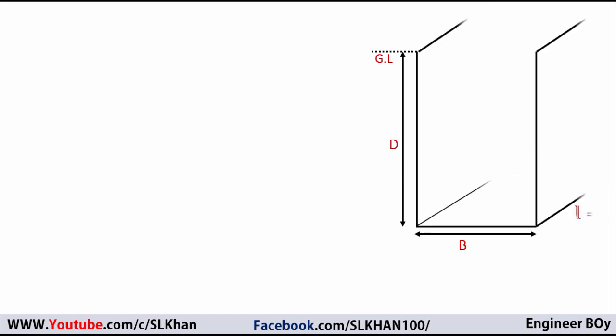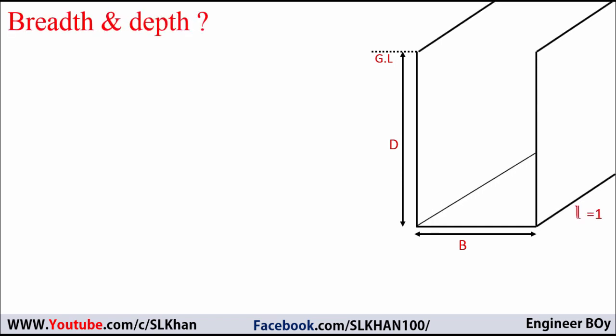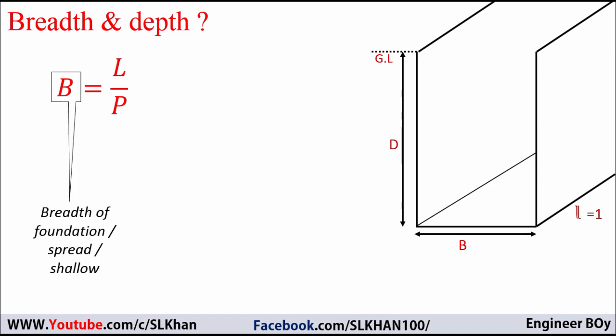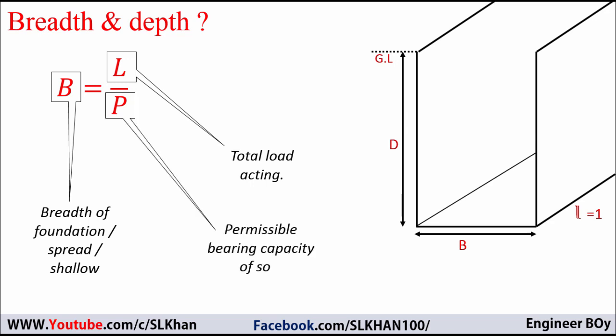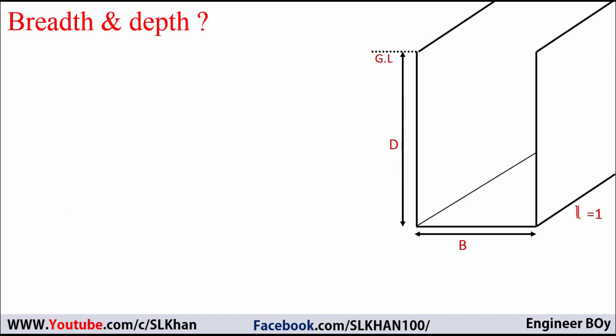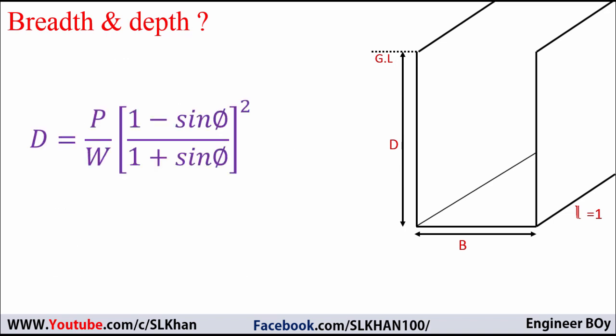For the breadth of foundation, we have B equals L divided by P, where B is the breadth of the shallow foundation, L is the total load acting on the foundation which includes self-weight load, live load, and everything. P is the permissible bearing capacity of the soil. For the depth of foundation, we have a separate formula: D equals P divided by W, times the quantity 1 minus sine of theta divided by 1 plus sine of theta, all squared.